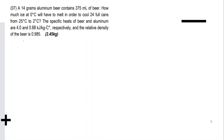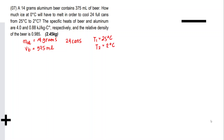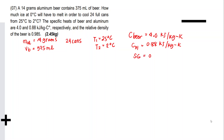Let's first write the given: mass of aluminum = 14 grams, volume of beer = 375 mL, 24 cans of beer, T1 = 25°C, T2 = 2°C, c of beer = 4 kJ/kg·K, c of aluminum = 0.88 kJ/kg·K, and specific gravity = 0.985.